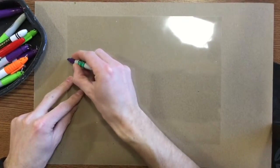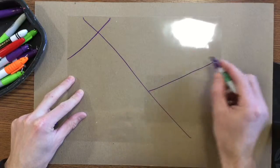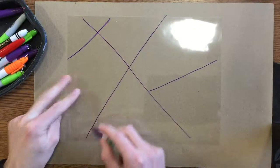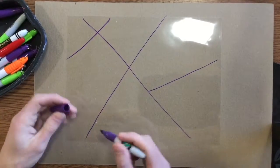So I would start off by maybe drawing some lines across my paper just to give me some different shapes. Alright so maybe four or five, six lines, something like that.